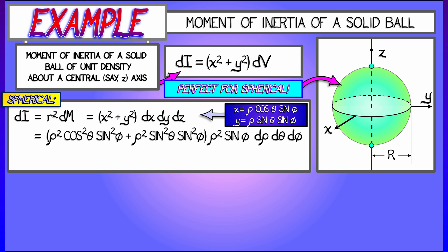That's a lot of squareds, a lot of thetas and phis. But look, there's a cosine squared theta plus sine squared theta hiding in there. Once you factor out a rho squared sine squared phi, that means our final inertia element dI is rho to the fourth sine cubed phi d rho d theta d phi.